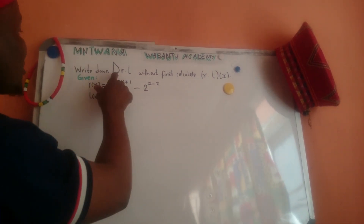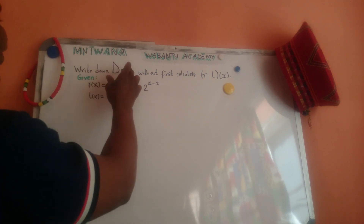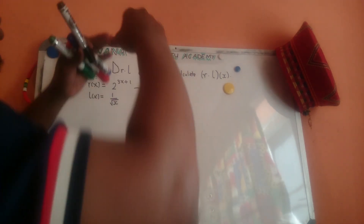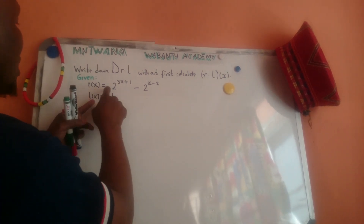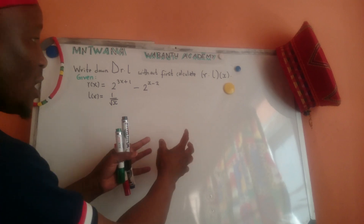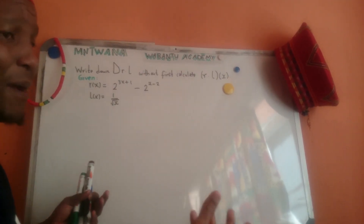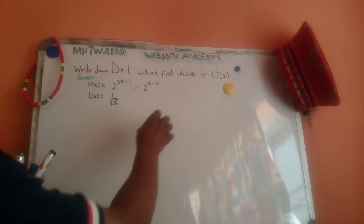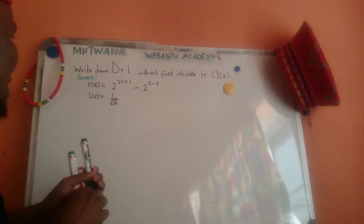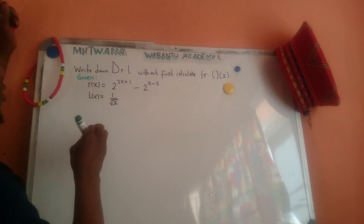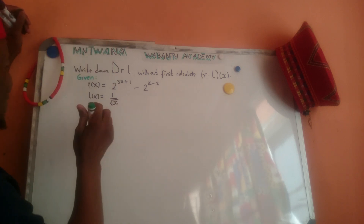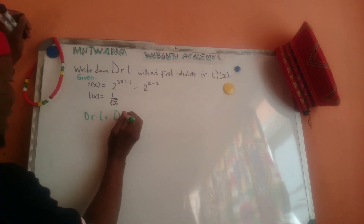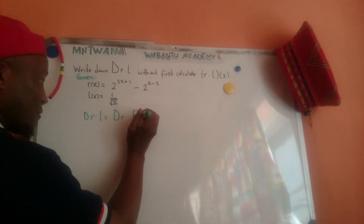So let's do this question. They say write down the domain of f multiplied by g without calculating. They don't want you to calculate f times g in the time domain, they just want you to work it out. So when you say domain of f multiplied by g, that means domain of f intersected with domain of g.